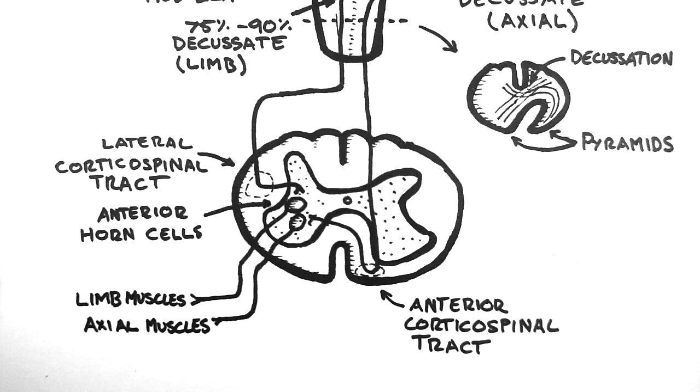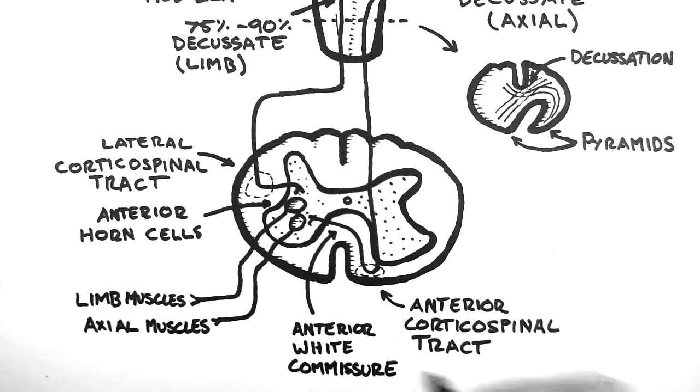The limb pathway decussates at the pyramids in the medulla, and the axial pathway decussates through the anterior white commissure in the spinal cord.